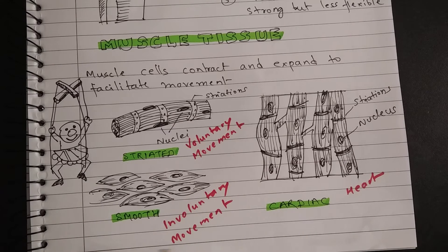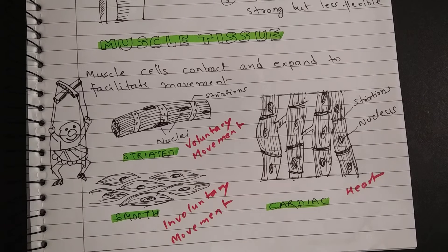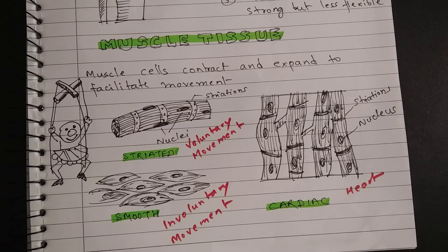Smooth muscles have spindle-shaped cells — pointed at the ends and wide in the middle. Smooth muscles control involuntary movements, which are not under our conscious control. For example, movement of the intestine and many other internal organs are controlled by smooth muscle.